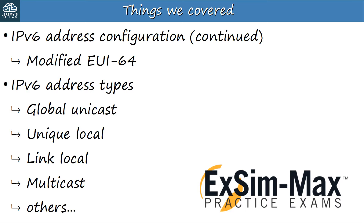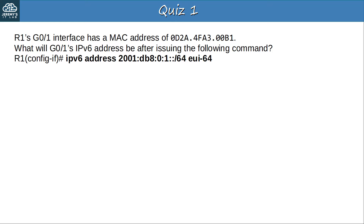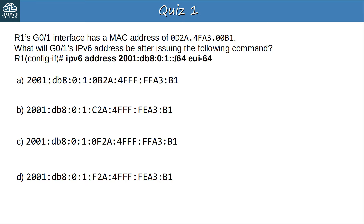Question 1: R1's G0-1 interface has a MAC address of 0D2A-4FA3-00B1. What will G0-1's IPv6 address be after issuing the command: IPv6 address 2001:DB8:1::/64 EUI-64? Pause the video here to find the correct answer. The answer is D. The 7th bit of the MAC address has been inverted to a 1, changing the D in the MAC address to an F. Also, FFFE has correctly been inserted into the middle of the MAC address to expand it to 64 bits.